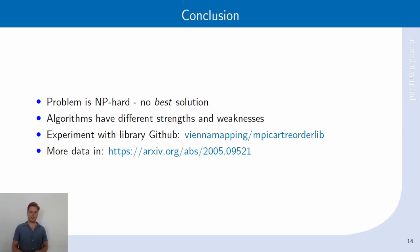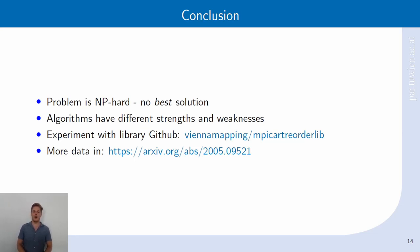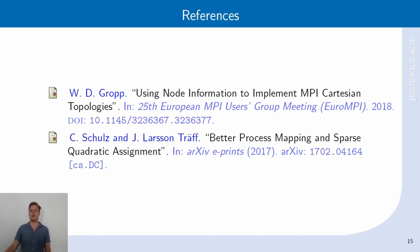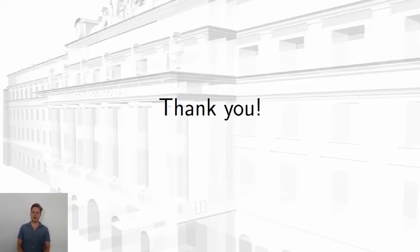If you are interested in more data, we are happy to say we provided a technical report available on arXiv, which includes tables with more data, more stencils, and more message sizes. Finally, the references for our competitors: the NodeCAD algorithm was presented by William D. Gropp, and the Vienna mapping tool was developed by Christian Schulz and Jesper Larsen Treff. Thank you very much for listening.